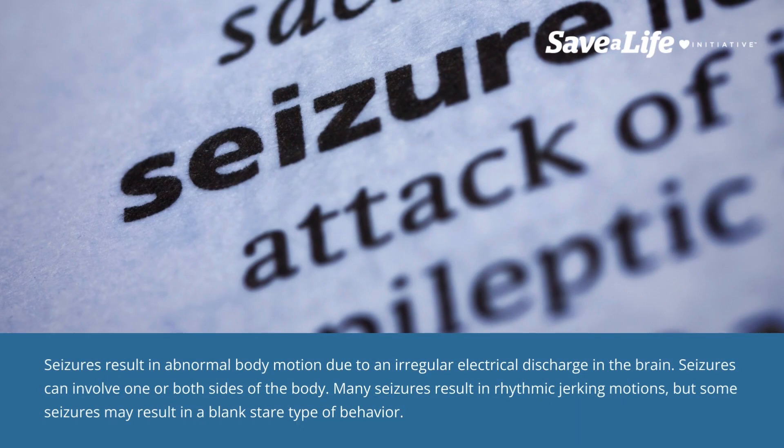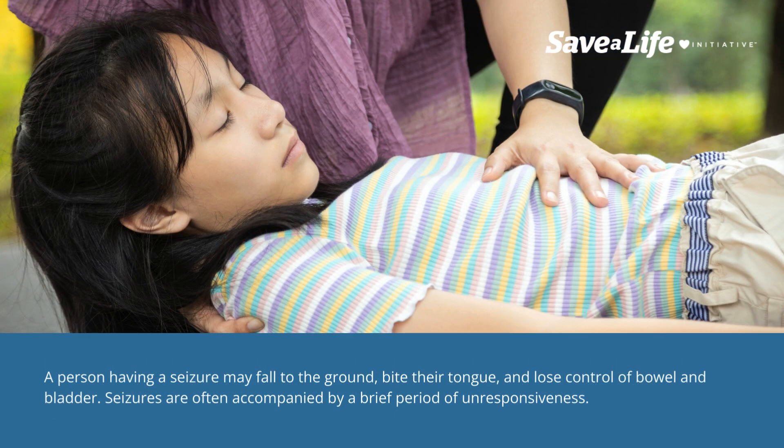Seizures result in abnormal body motion due to an irregular electrical discharge in the brain. Seizures can involve one or both sides of the body. Many seizures result in rhythmic jerking motions, but some may result in a blank stare type of behavior. A person having a seizure may fall to the ground, bite their tongue, and lose control of bowel and bladder. Seizures are often accompanied by a brief period of unresponsiveness.